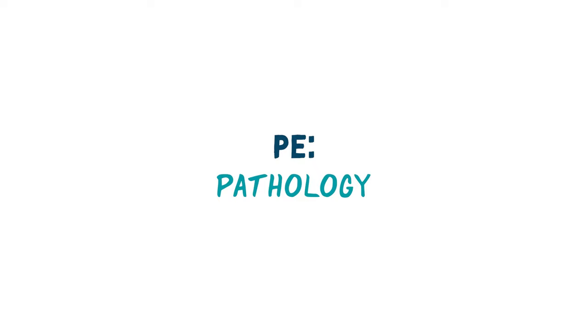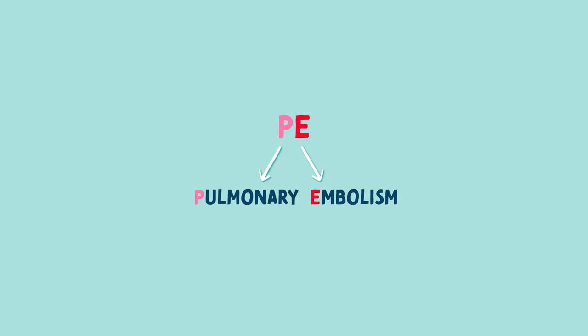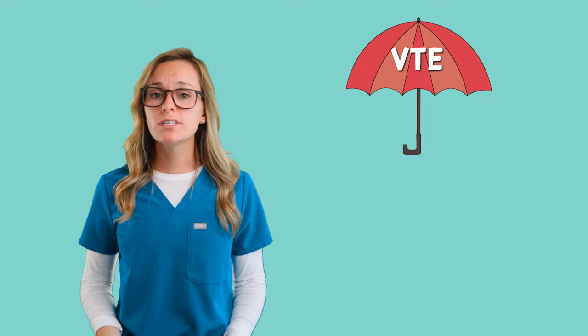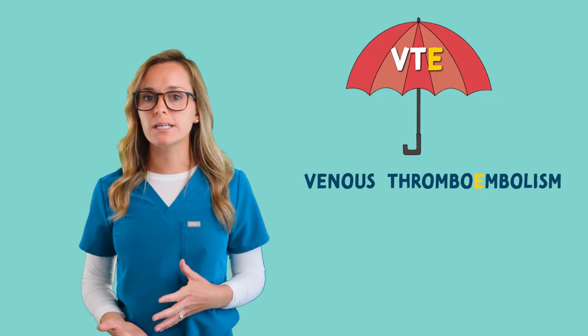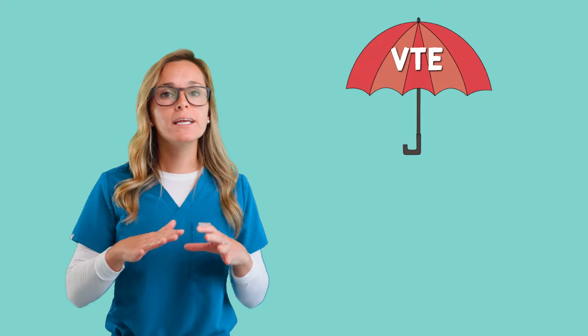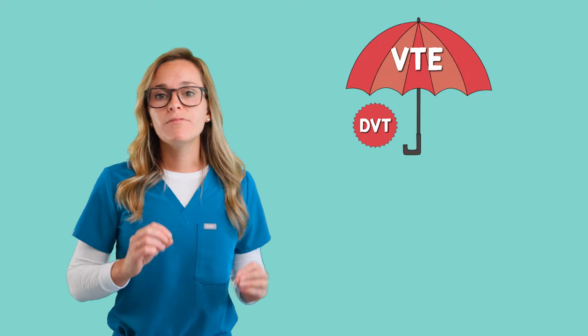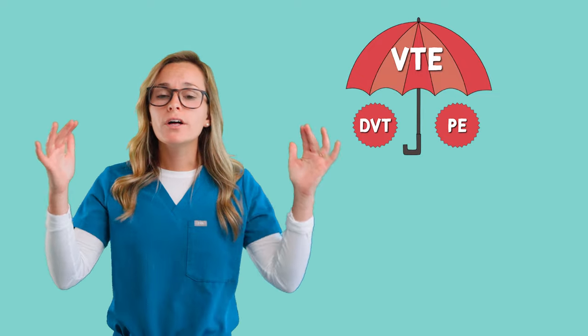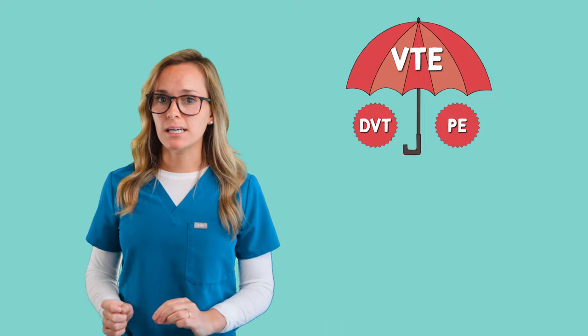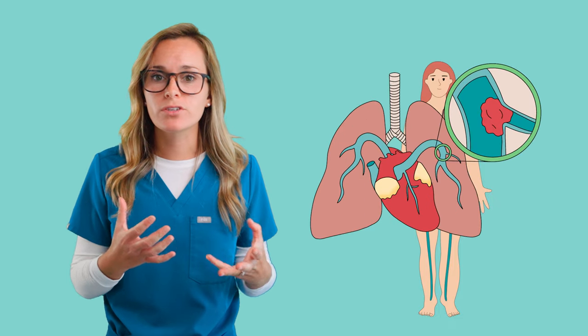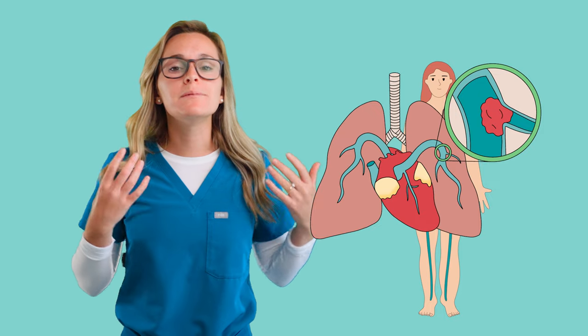PE stands for pulmonary embolism. This falls beneath the large umbrella of a VTE, which stands for venous thromboembolism — clots which occur in any vessel of the body. DVTs, deep vein thrombosis, and PEs both fall under that VTE umbrella. I have an entire video talking about DVTs. When a clot sits in the leg as a DVT and it dislodges, it can travel upward into the lungs, causing the pulmonary vessels to become blocked — and this is when it becomes a PE.